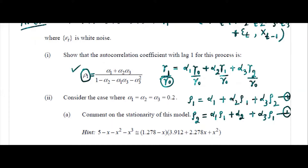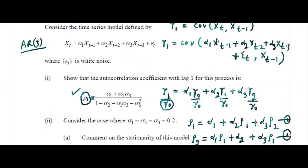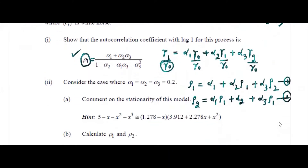Suppose you see this kind of question for the first time in the exam — you have to think how to find rho 1. If you know this is an AR3 process and you need to find rho 1, there is only one method. You need to form equations using this approach or by using Yule-Walker formulas. Once you form the equations, identify that there are two unknowns — rho 1 and rho 2 — in terms of alpha 1, alpha 2, alpha 3.